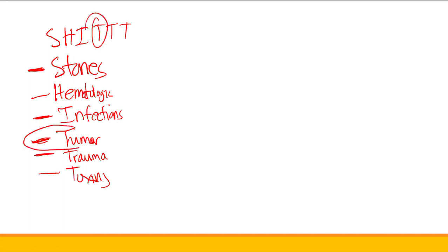The most important cause to remember is tumor. Whenever you have gross hematuria or hematuria in a patient with risk factors, you must rule out tumor. Clinically, this requires a triple workup: CT urogram to look for a renal tumor, cystoscopy to look for a bladder tumor, and urine cytology to ensure nothing is missed along the urinary tract.